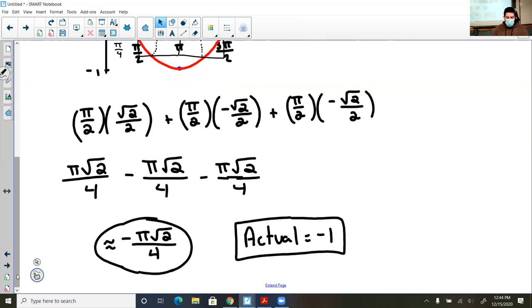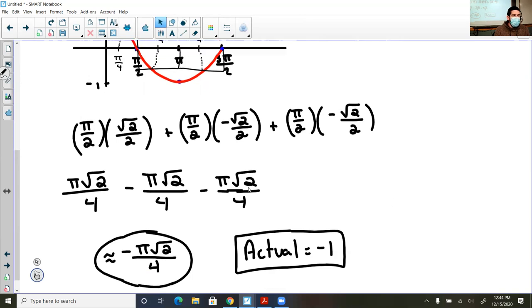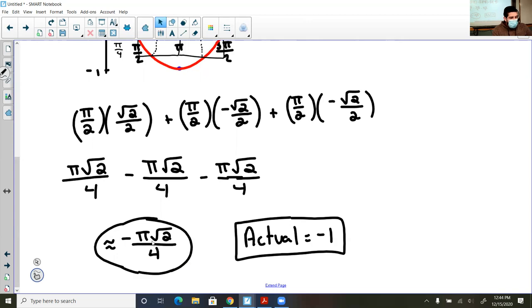Now when I take out my calculator and I try that out, I get negative pi root 2 divided by 4, I get negative 1.11. Now I plug this into my calculator, which the TI-Nspires, by the way, will find the exact value of the integral. We'll get there. For those that don't have an Nspire, we'll do it a little bit differently.